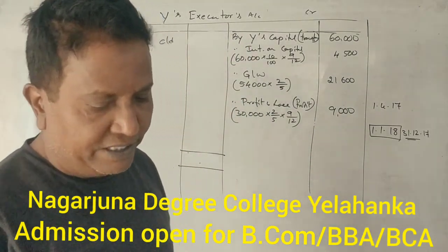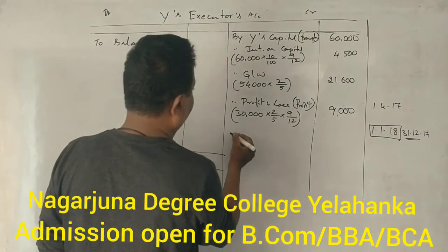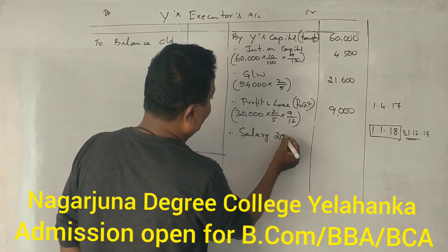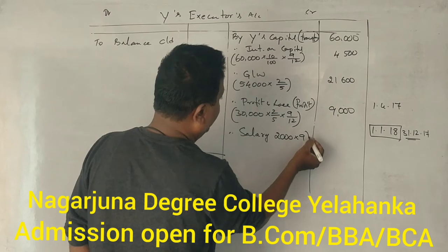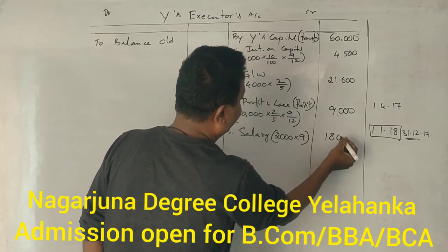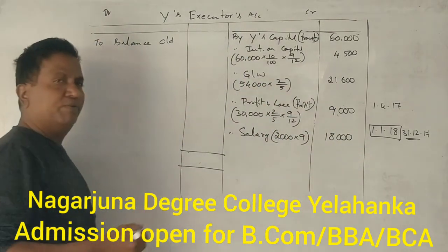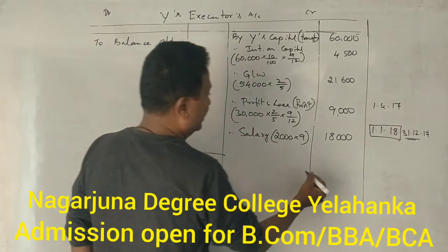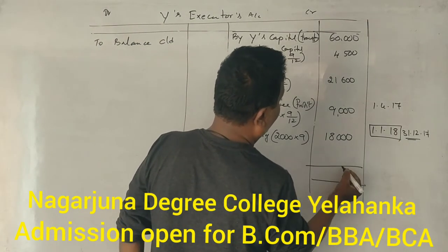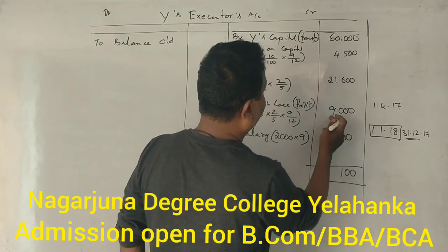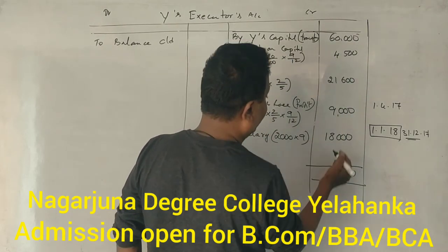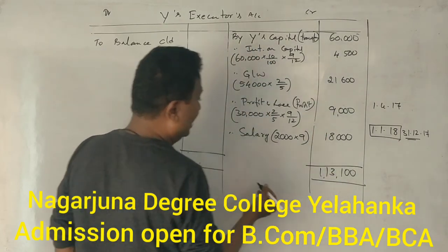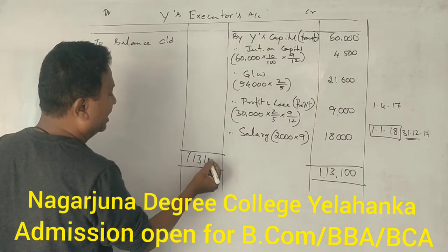Next is salary. Y's salary is 2,000 per month for 9 months, giving 18,000. Adding all entries: capital 60,000, interest on capital, share of goodwill 21,600, share of profit 9,000, and salary 18,000 — the total comes to 1,13,100.